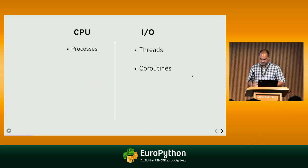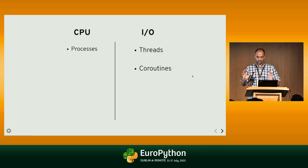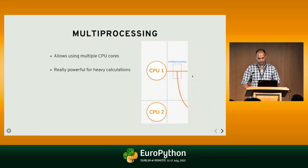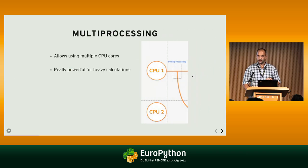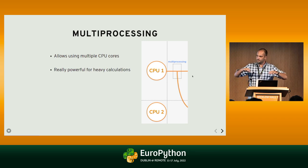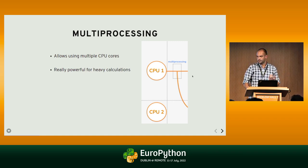We basically have three main tools for async Python: processes, threads, and coroutines. Multiprocessing is basically a Python way to physically start a new process in the operating system that could potentially be handled by another CPU — it's the way to scale and use your CPUs from your Python program, and it's really powerful for heavy calculations.